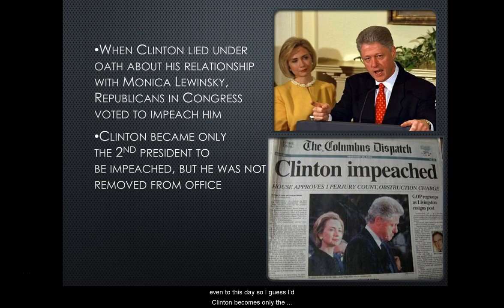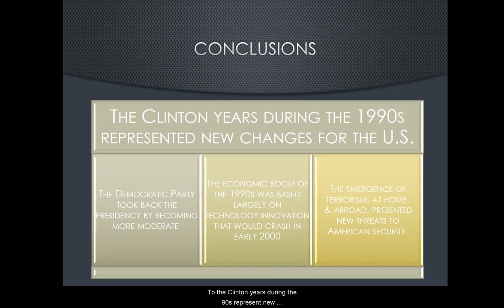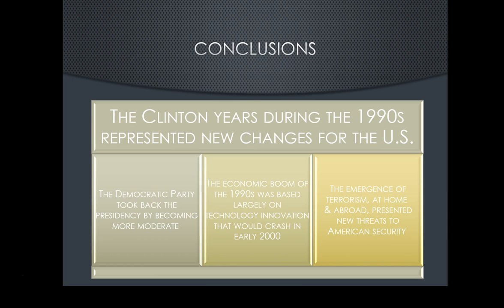Bill Clinton is the second president in American history after Andrew Johnson to be impeached, Donald Trump being the third, but none of those men were ever removed from office. The Clinton years during the 90s represent new changes for the nation — the Democratic Party took back the presidency and became much more moderate. The economic boom of the 90s, based largely on technological innovation, would end up crashing in the early 2000s in what we call the dot-com bust. And the emergence of terrorism both at home and abroad presents new threats to American security that would perpetuate into the 21st century. This brings us to the end of Unit 10, Lesson 1. I hope you have a great day.